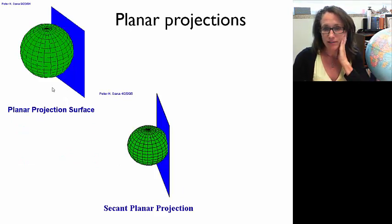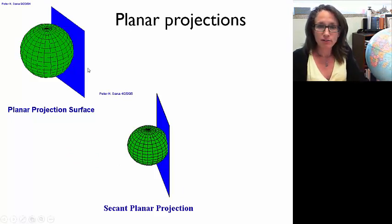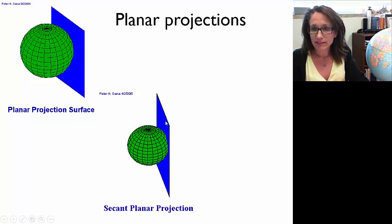If we have planar projections, we can intersect our Earth with the plane at a point, or we could slice our planar projection through the globe and make what's called a secant planar projection, which has minimal distortion around a circle of contact there, with reduced distortion in that area.